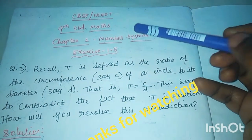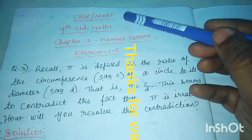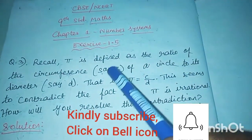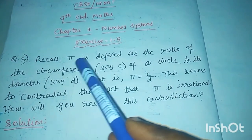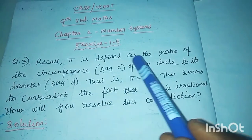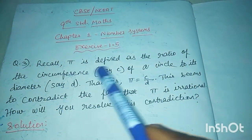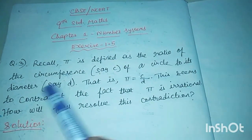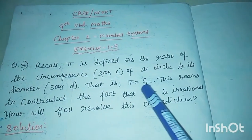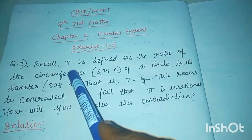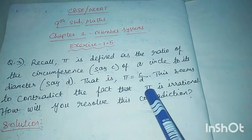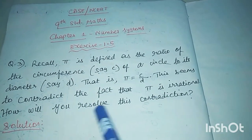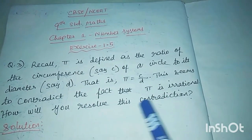Hello friends. In this video, we look at 9th standard CBSE syllabus Chapter 1 Number Systems, Exercise 1.5, third problem. The problem states: pi is defined as the ratio of the circumference of a circle to its diameter, that is pi equals C divided by D. This seems to contradict the fact that pi is irrational. How will you resolve this contradiction?